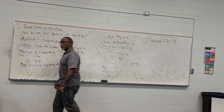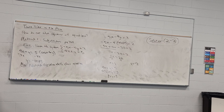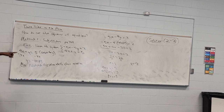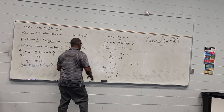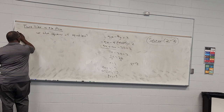A solution to a system will always be an ordered pair — you'll have an x and a y coordinate. If you want to check the solution, you have to put it in both equations and make sure it satisfies both — not just one. That is the substitution method: solve either equation for any one variable, substitute that expression into the other equation, and solve.